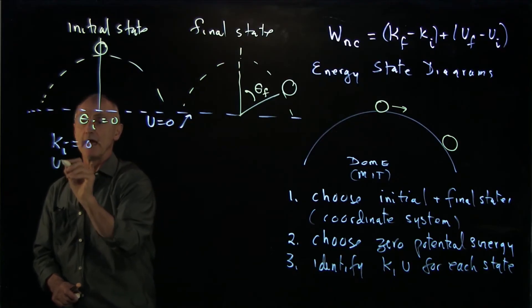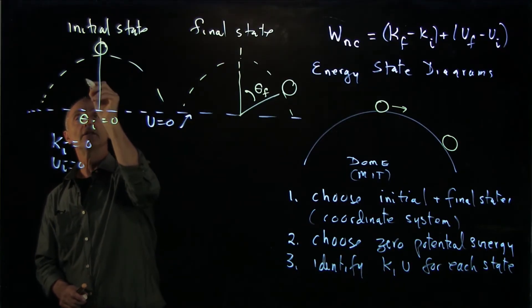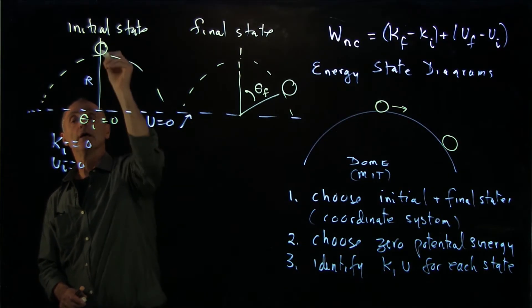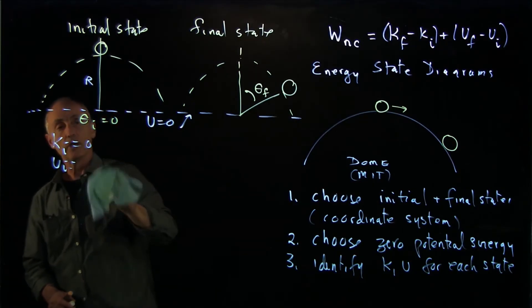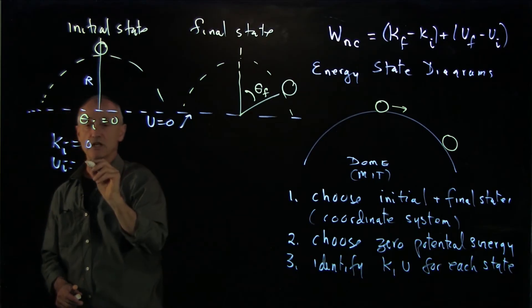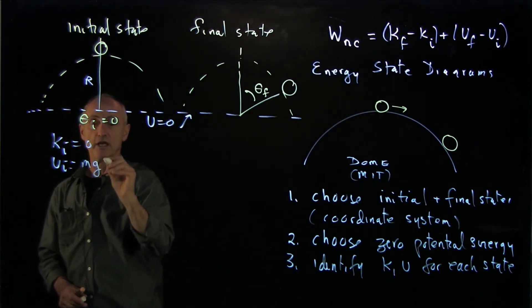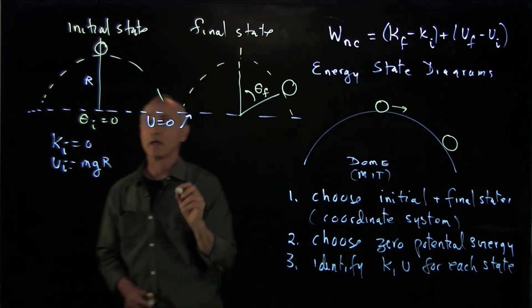It's at rest, 0. And U initial, well, I didn't introduce a parameter r. It's U initial is how high the gravitational potential energy. So in this particular case, mg times r.